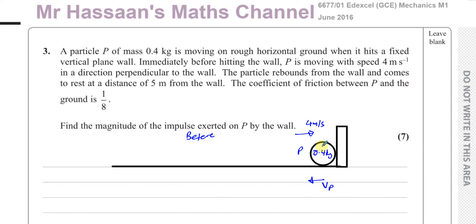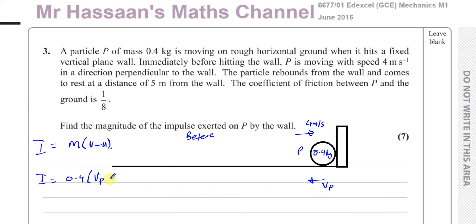That's the situation just before and just after the wall. The magnitude of the impulse exerted on P by the wall is the same as the impulse received by the wall, and that is given by the change in momentum. So impulse equals m(v − u), which is 0.4 times vp minus the original velocity of 4. If I know vp, I can work out the impulse.